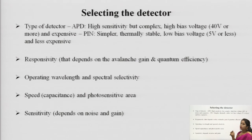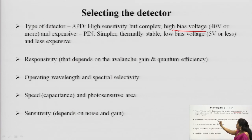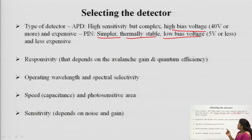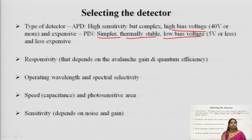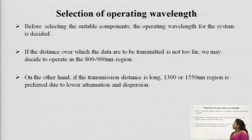Selecting the detector: APD — avalanche photodiode — is highly sensitive but complex, requires high bias voltage, and is expensive. PIN photodiode is simpler, thermally stable, requires low bias voltage, and is less expensive. Important parameters include responsivity, operating wavelength, speed, and sensitivity. The choice of fiber, source, and detector all depend on which type of system we are designing.